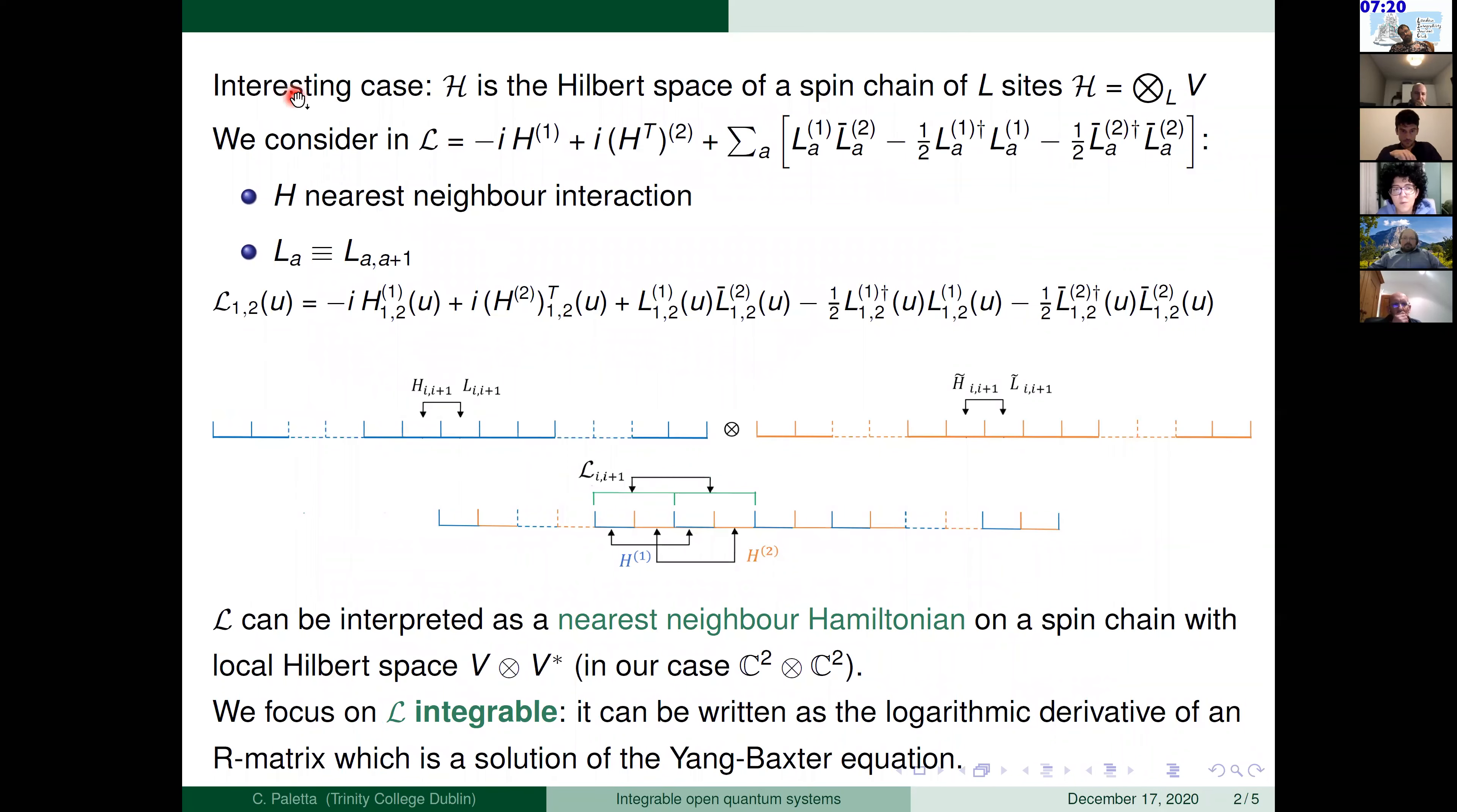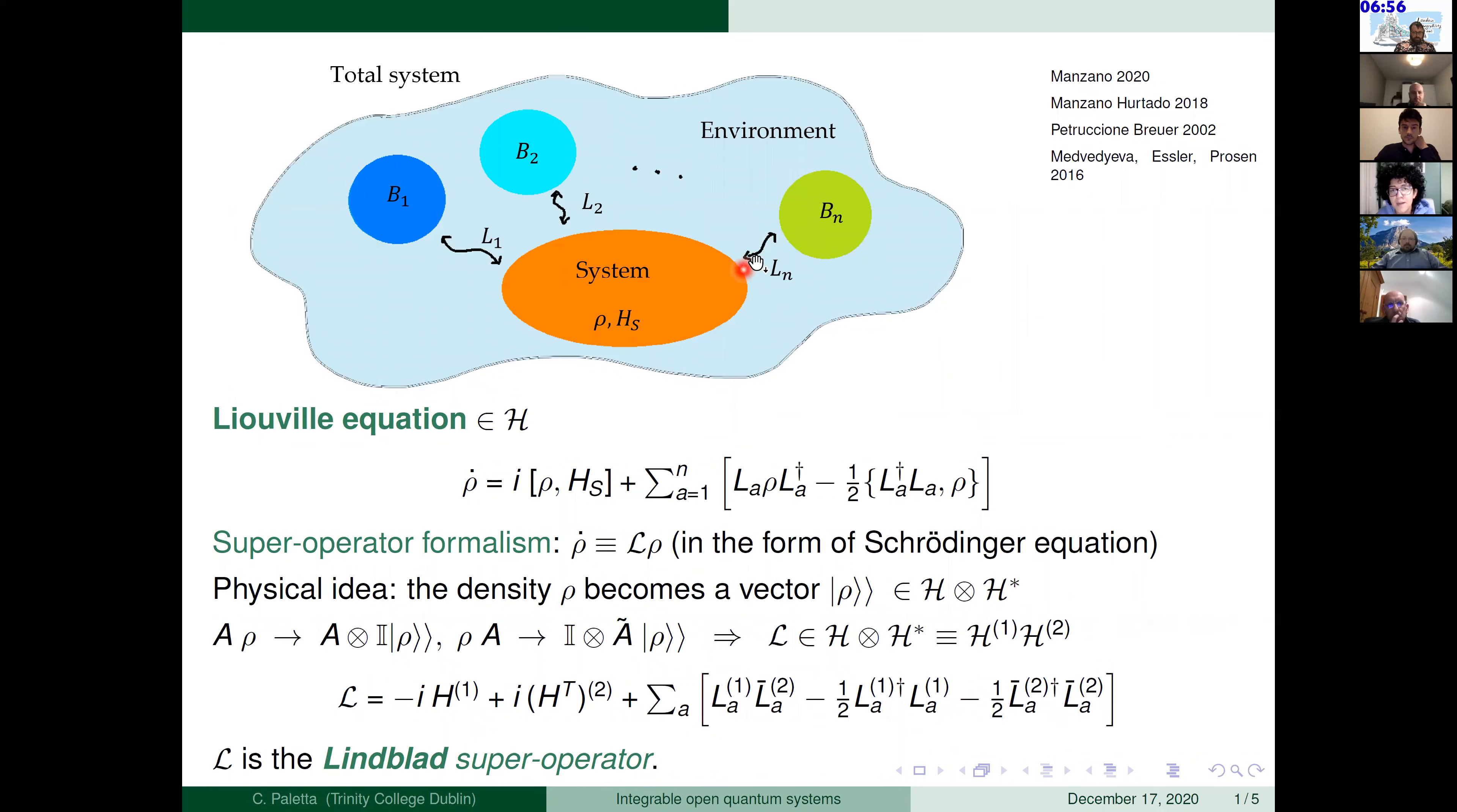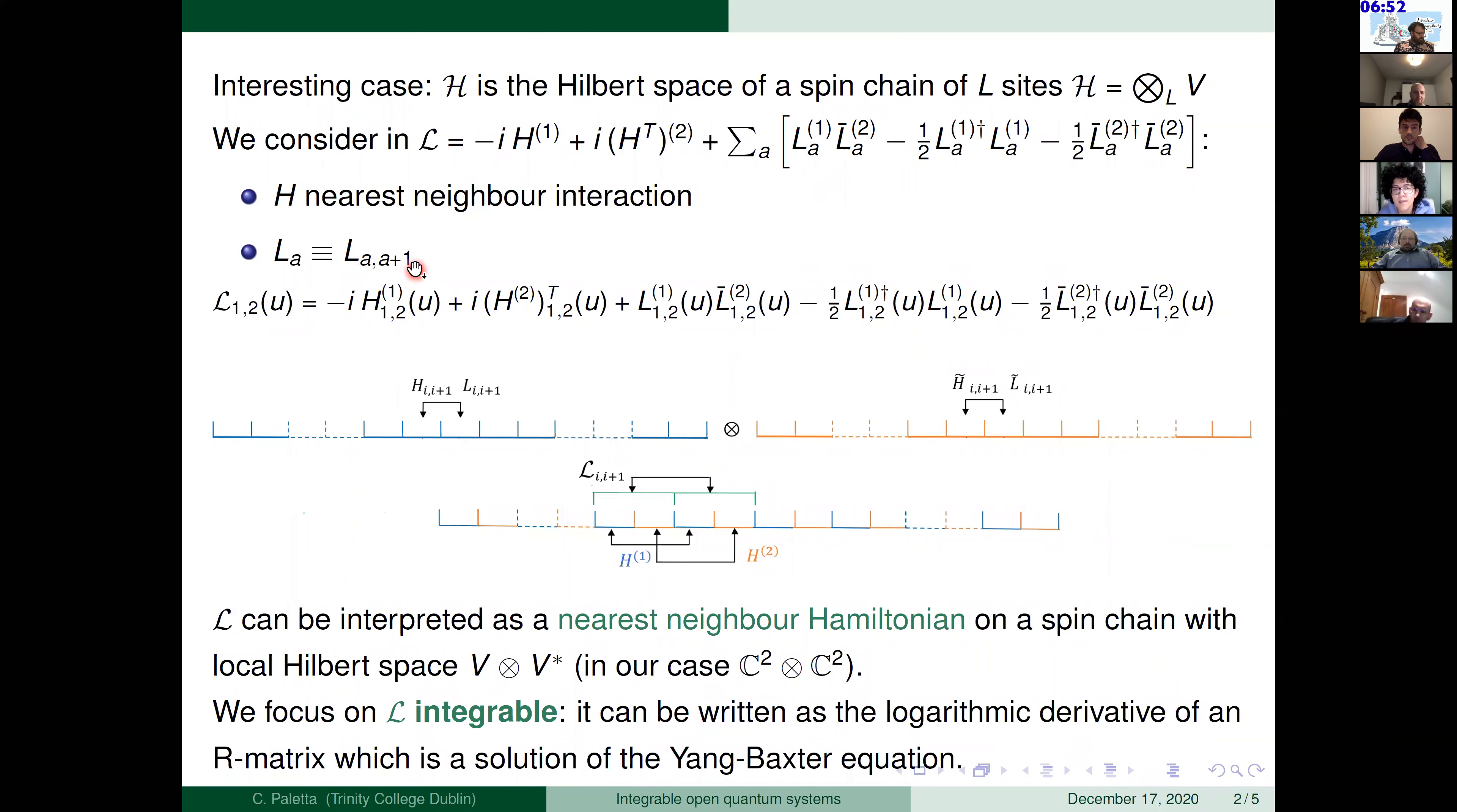The interesting case that we work in is where H is the Hilbert space of a spin chain with L sites. So this one I just copied the expression I gave in the previous slide and in this one we considered the H to be a nearest neighbor interaction and L that were the interaction with the baths. Now the index A just became the sum over the sites of the spin chain. So the super operator takes now the following form and given in that form it will be clear that we can interpret this super operator as a nearest neighbor Hamiltonian on a particular spin chain with a new local Hilbert space that now is V tensor V tilde.